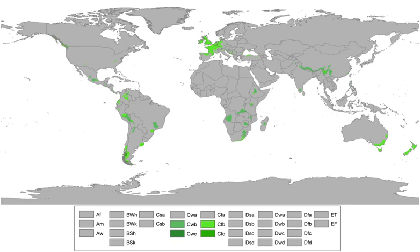An oceanic climate, also known as a marine or maritime climate, is the Köppen classification of climate typical of west coasts in higher middle latitudes of continents, and generally features mild summers and mild winters, with a relatively narrow annual temperature range and few extremes of temperature, with the exception for transitional areas to continental, subarctic and highland climates.